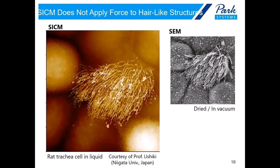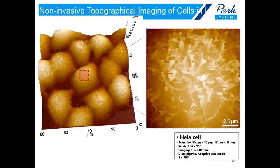This is another powerful example of non-contact imaging with SICM. These are trachea cells. Some of the cells grow very long hair-like cilia, which could be used for transportation. We observed the cell in liquid first by SICM, and then it was imaged by SEM. It is impossible to get such images using AFM. Non-contact imaging with SICM gives us the opportunity to look at the surface of single live cells under physiological conditions with high resolution. The image shows that highly complicated small projections on the HeLa cell membrane are clearly observed by SICM.